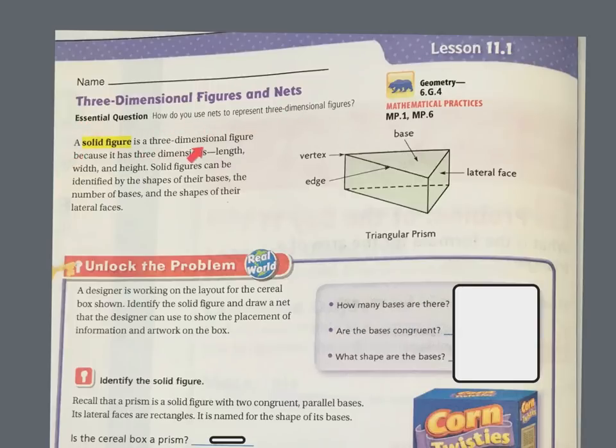A solid figure is a three-dimensional figure because it has three dimensions: length, width, and height. Solid figures can be identified by the shapes of their bases, the number of bases, and the shape of their lateral faces.